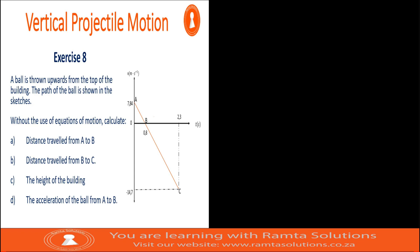Hello guys, welcome to Rental Solutions. Welcome to another lesson on vertical projectile motion. Today on example 8, we're looking at the situation where a ball is thrown upwards from the top of a building. The path of the ball is shown on the sketch. We are not going to use equations of motion to make our calculations today. Let's try to understand this graph.